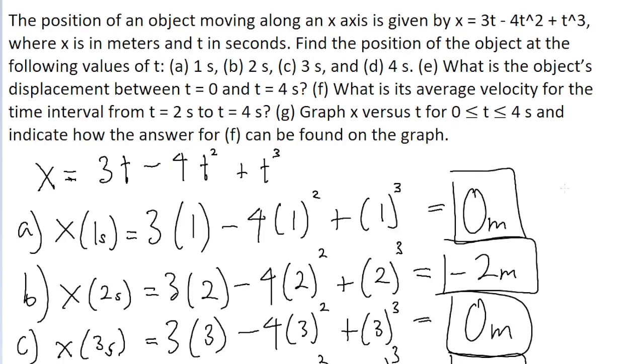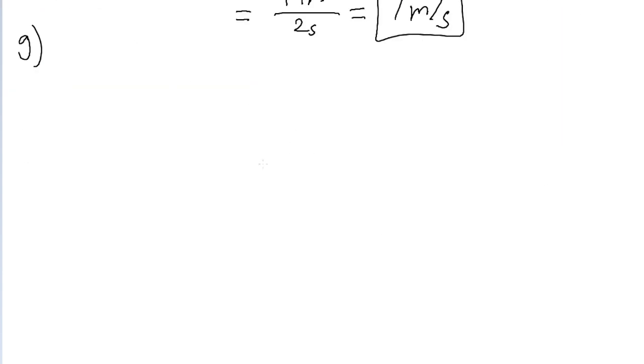The final part of the problem asks us to graph the situation of position versus time and to show some indication of the average velocity. So I'm going to set up a basic coordinate system. Here's our x axis and here's our time axis. The x axis is in meters and the horizontal axis, the t axis is in seconds.